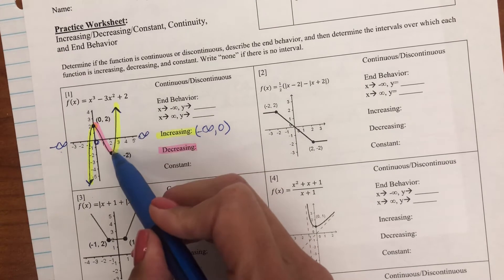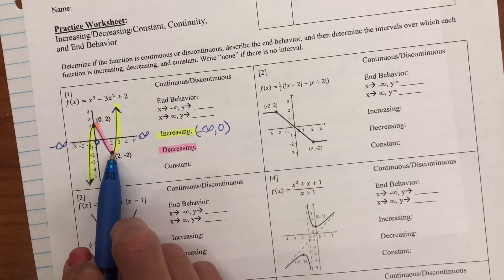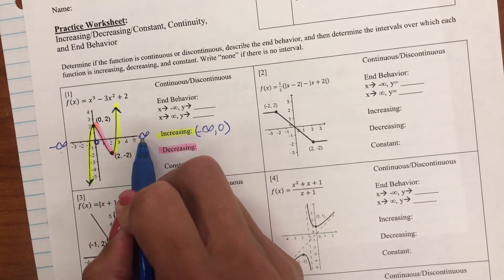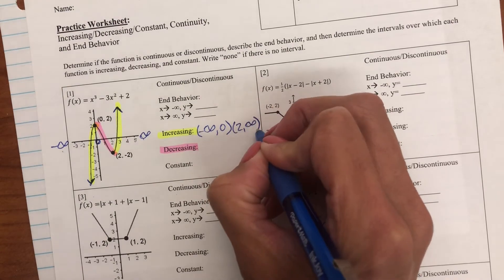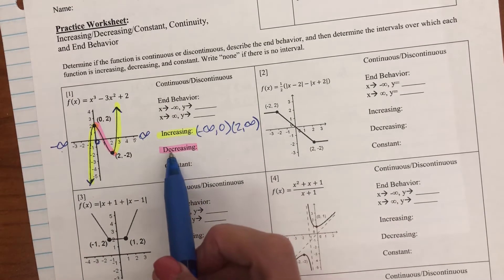Here's my second increasing interval. I'm starting here at two, and it keeps going on and on forever to infinity. Two to infinity and use parentheses.